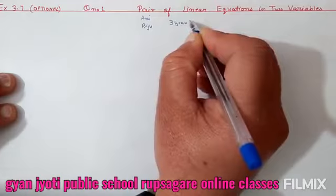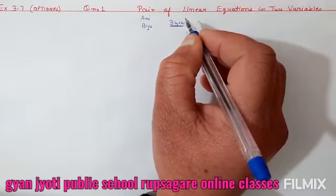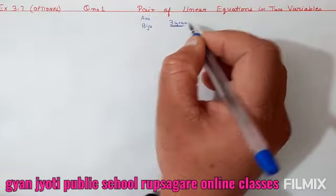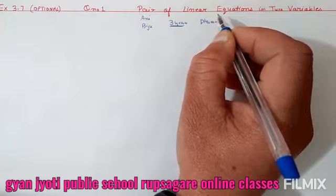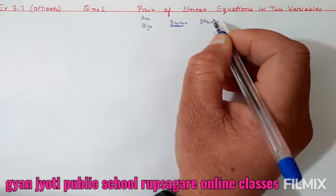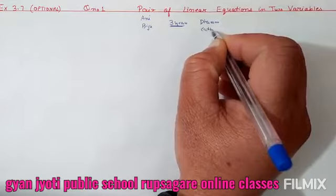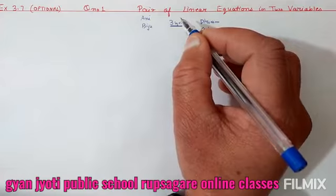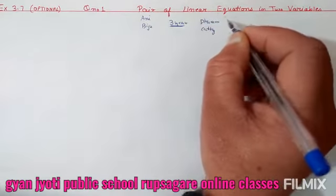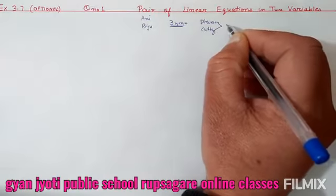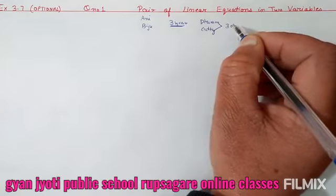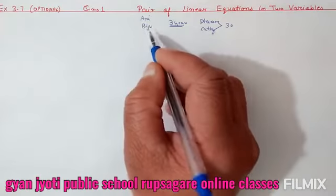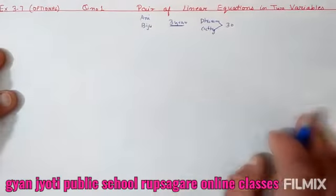Teen saal ka difference hai. Ani's father Dharam is twice as old as Ani. Ani ke pitaji hain Dharam, wo Ani se double hain age mein. Biju is twice as old as his sister Kathy, aur Kathy Biju ki half hai. The ages of Kathy and Dharam differ by 30 years. Toh find the ages of Ani and Biju. In ages ko pehle x, y maan lijiye, uske baad question dhang se samajh mein aayega.